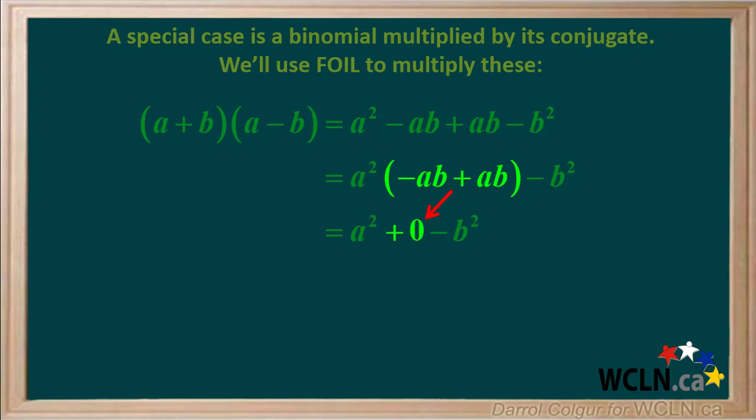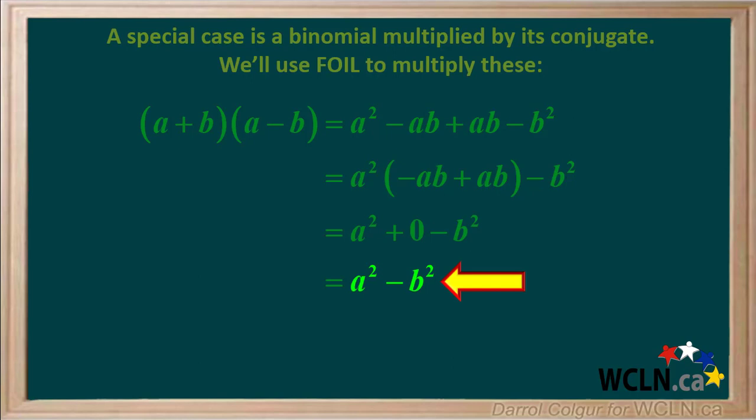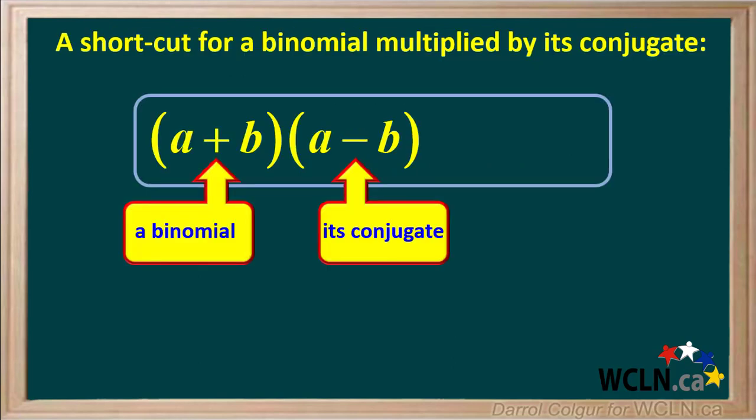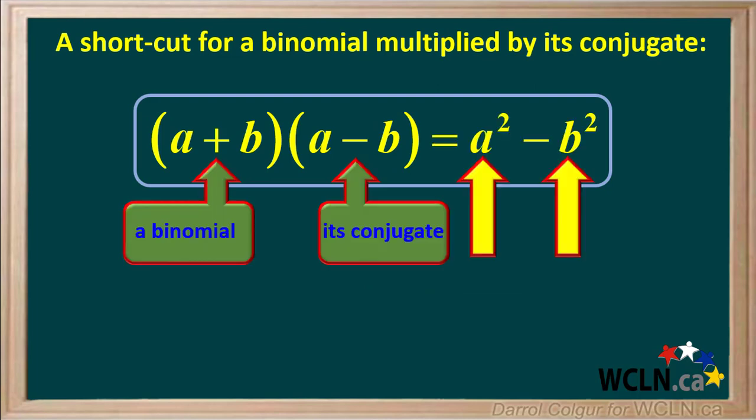Notice that in the middle of this expression we have negative ab plus ab, which adds up to zero. So we replace negative ab plus ab with zero, and we are left with a squared minus b squared. So whenever we have a binomial multiplied by its conjugate, it is just equal to the first term squared minus the second term squared. We can use this as a shortcut.